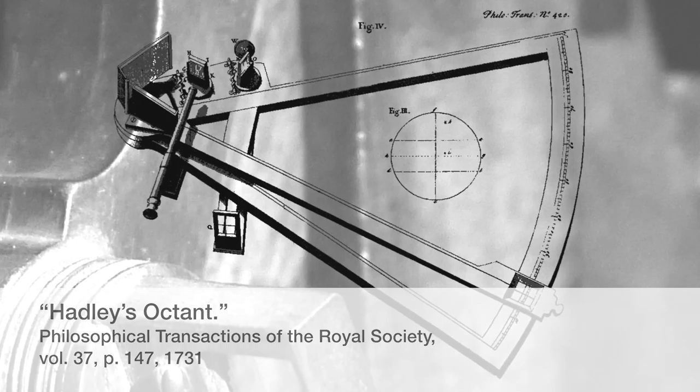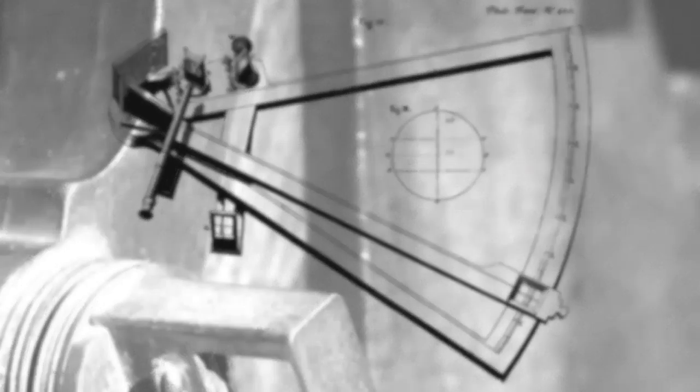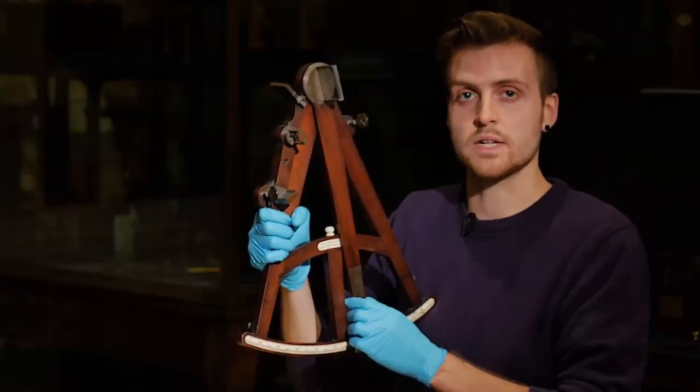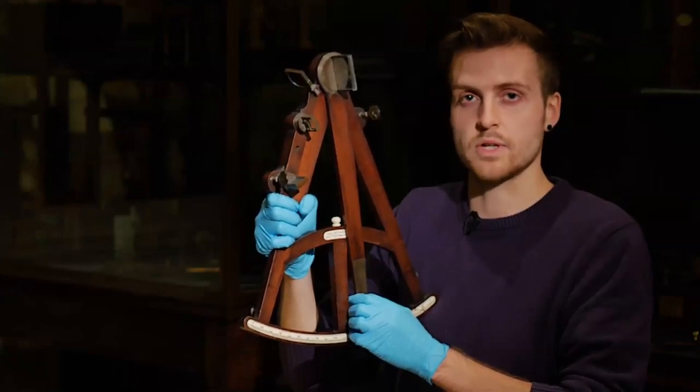The octant was the first in a series of navigational instruments based on this reflecting principle. These instruments were absolutely crucial for navigation and exploration in the 18th century, and responsible for literally redrawing the world.